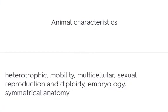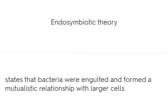Animal characteristics include: heterotrophic, mobility, multicellular, sexual reproduction, diploidy, embryology, and symmetrical anatomy. The endosymbiotic theory states that bacteria were engulfed and formed a mutualistic relationship with larger cells.